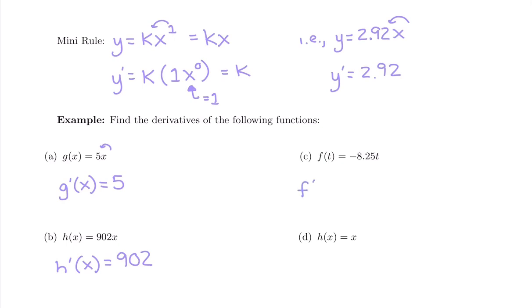Following this pattern, you have f prime of t — a different letter — but if you just have a first power on that variable, the derivative is just going to end up being the number up front. The derivative of negative 8.25t is negative 8.25.